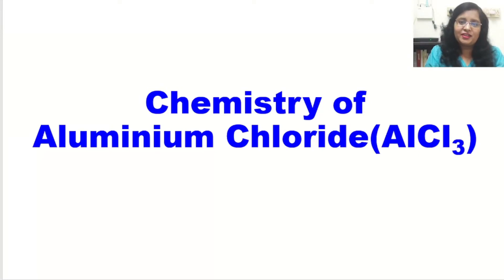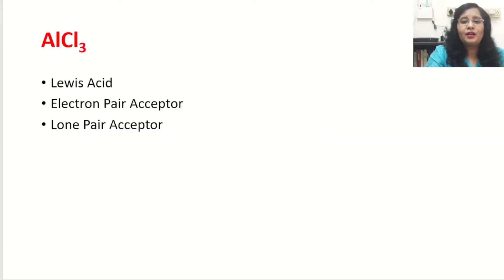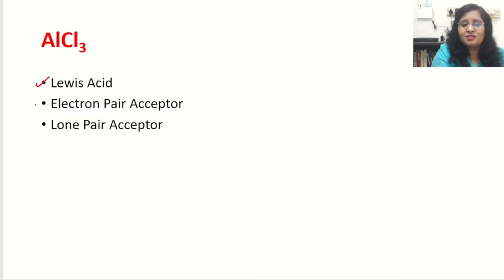Hello friends, welcome to Chemistry Nuggets where you can polish your knowledge and clear your thoughts. Today's video is about aluminium trichloride, or aluminium chloride — why it is called a Lewis acid, or why it is called a lone pair acceptor. I will answer all these questions in this video. AlCl₃ has several names: Lewis acid, electron pair acceptor, and lone pair acceptor.